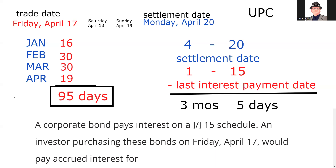However you want to get there, you need to get there. It's low probability you'll need to calculate the number of days, but high probability you need to understand the Uniform Practice Code and that buyers pay sellers from the last interest payment date up to but not including settlement. Remember: inch by inch, your Series 7 is a cinch; yard by yard, your Series 7 is hard. I'll see you for the next explication request.